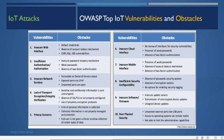OWASP's Open Web Application Security Project has identified the top 10 IoT vulnerabilities. First is insecure web interfaces, where default credentials may be used, account lockout mechanisms are absent, and vulnerabilities like cross-site request forgery, SQL injection, and cross-site scripting can occur.